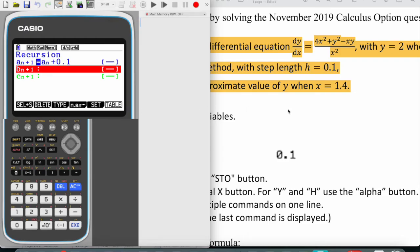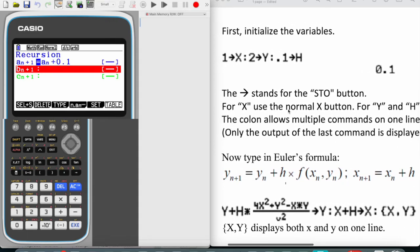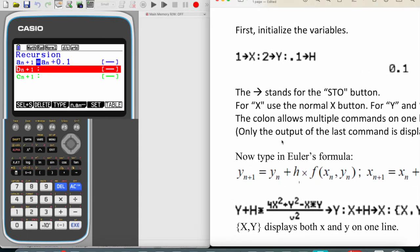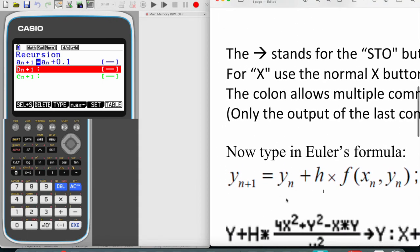Now let's come to the y value. For the y value we know we are going to be using Euler's formula. In Euler's formula, any y value equals the previous y value plus h multiplied by the differential equation.